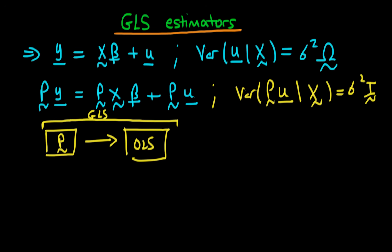And GLS estimators, because the transformed system has homoskedastic errors, actually turn out to be BLUE. Okay, so let's go ahead and derive this matrix P.